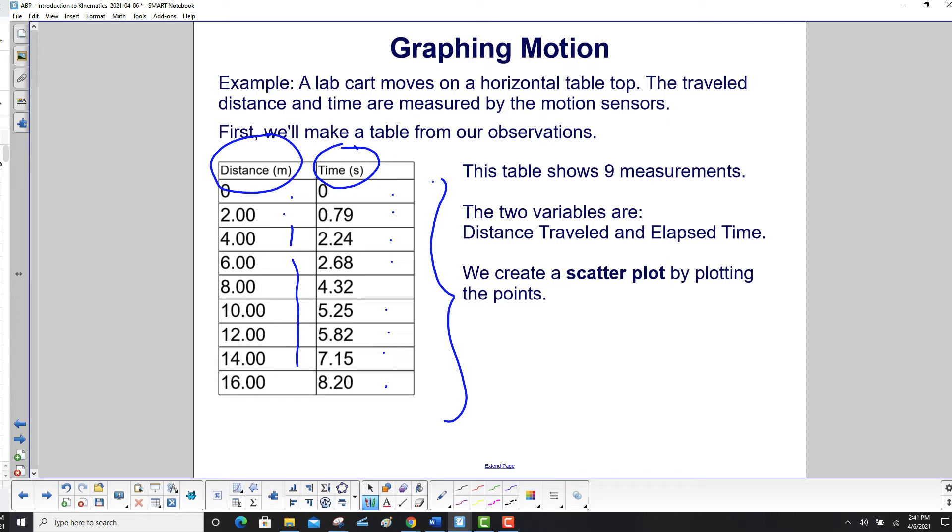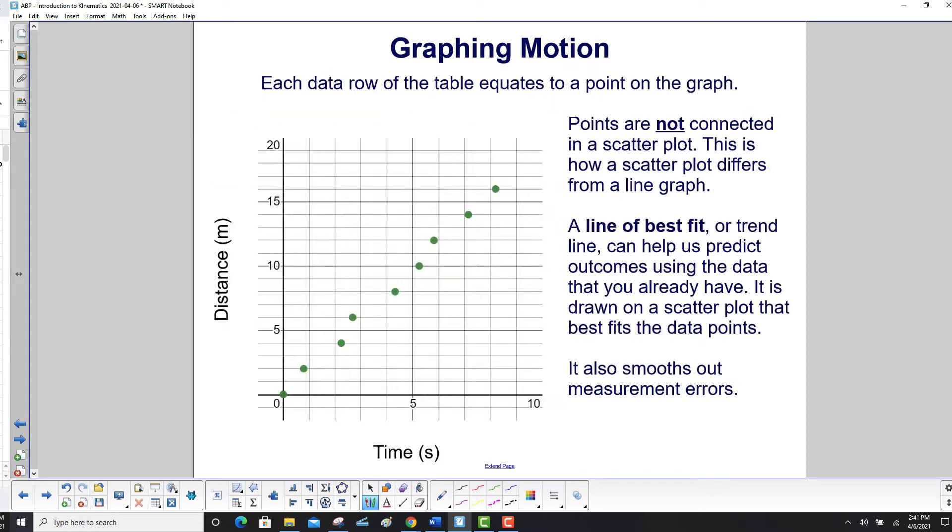We're going to create a scatterplot by plotting the points. Each data row of the table, and remember we had 9 rows, equates to a point on the graph. Here's the points.